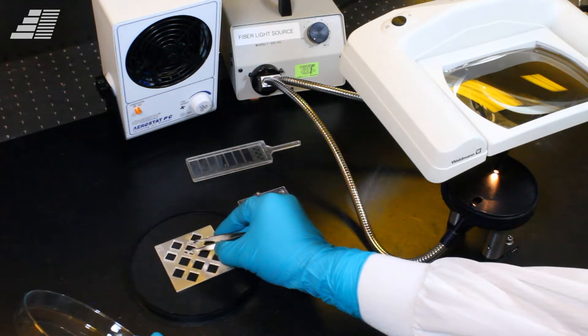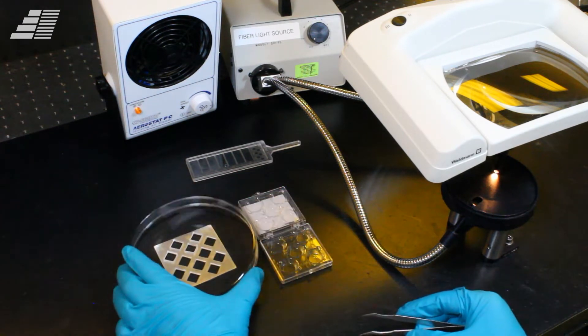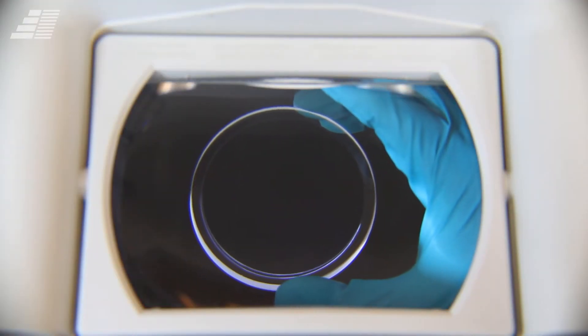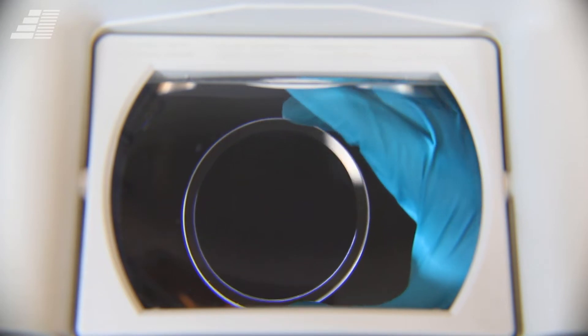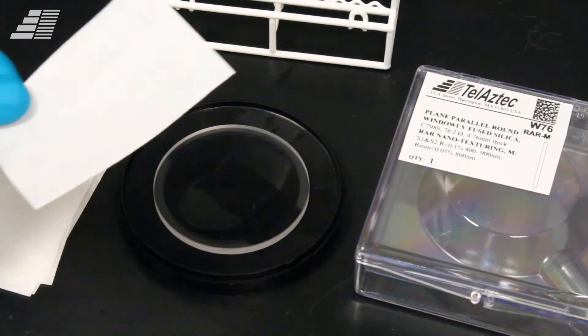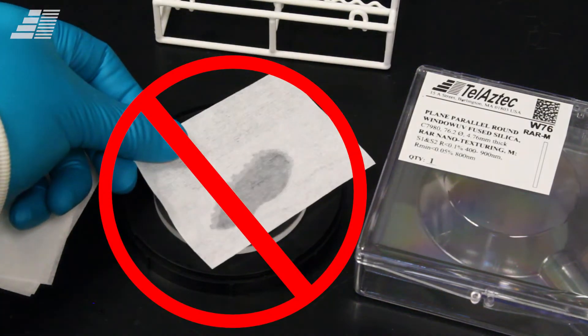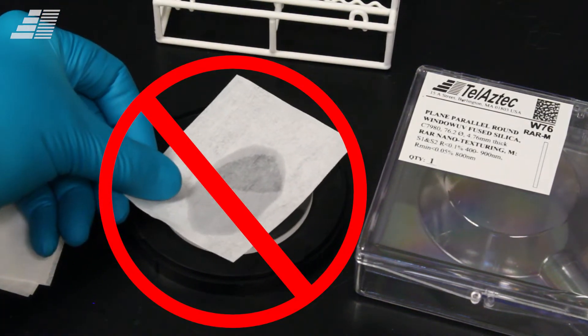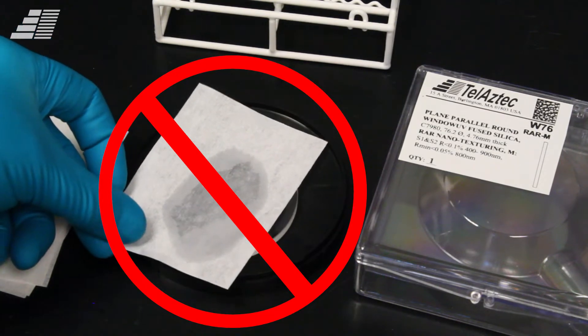With the structure of the nanotextured surface, residues and contaminants are mostly found in the valleys where they can't be removed by a simple physical wipe. This is also why the conventional drop and drag method is not recommended for nanotextured optics since dirt can be forced deeper into the texture, making any problem worse.